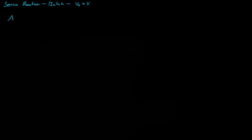So let's say we have A, and A can go to B, governed by K1. So the reaction rate of A going to B is governed by K1. However, B will go to C, and B going to C is governed by K2.